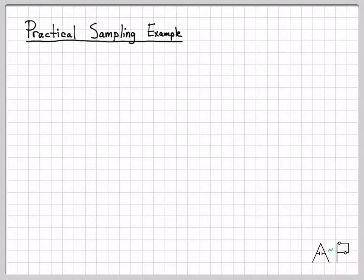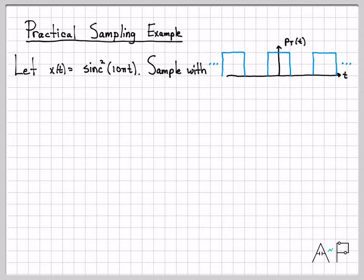All right. So in the last video, we worked through the general theory of practical sampling. In this video, we're going to work through a very specific instance of it. In this video, we are going to work with the continuous time signal x(t), which is a sinc squared function. And we are going to sample that with this waveform pt(t). So pt(t) in this example is kind of this rectangularly pulsed waveform.